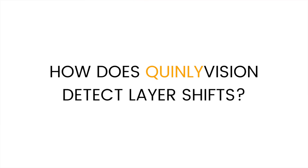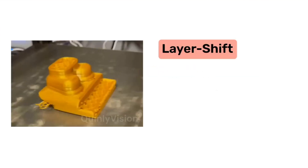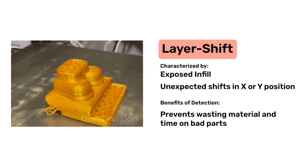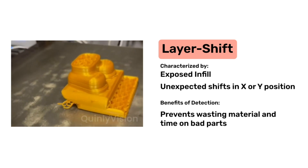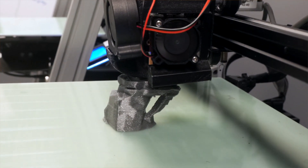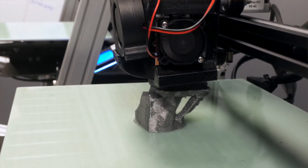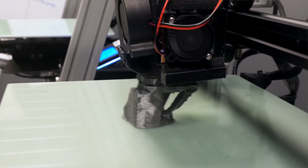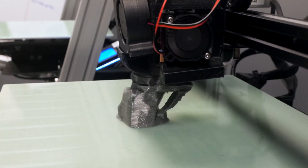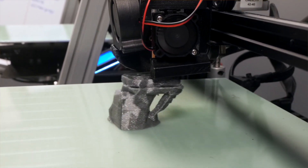Quinly Vision looks for a shift in the printed layers — if something is continuing straight and moves slightly to one side or the other, that's an indication of a layer shift. Another thing it looks for is the drooping effect on one end of the print and the exposed infill on the other side. Sometimes due to the camera angle, you won't be able to see both at the same time, so it has to look at a combination of the shifting effect and the drooping or exposed infill.